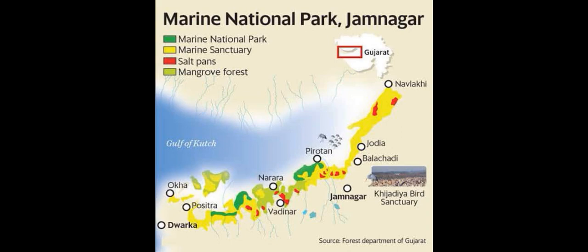This is the location of Marine National Park, Gulf of Kach. You can see several islands depicted in the picture, out of which the most famous one is Pirotan Island.